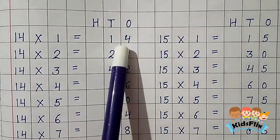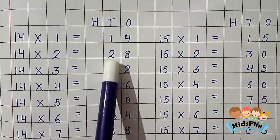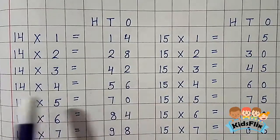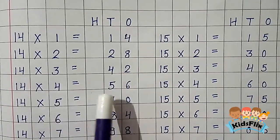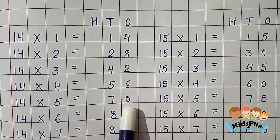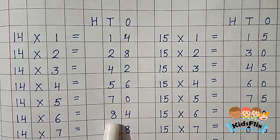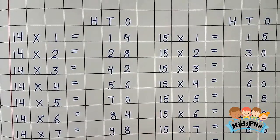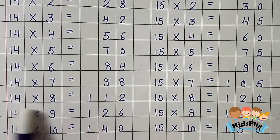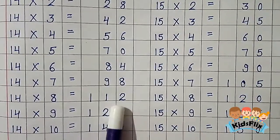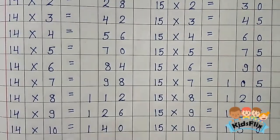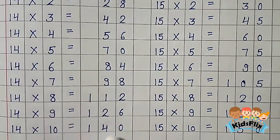14 1s are 14. 14 2s are 28. 14 3s are 42. 14 4s are 56. 14 5s are 70. 14 6s are 84. 14 7s are 98. 14 8s are 112. 14 9s are 126. 14 10s are 140.